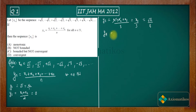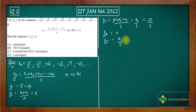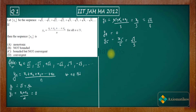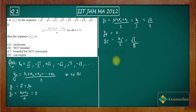For y4: the pairs cancel — x1 with x2, x3 with x4 — giving y4 = 0. For y5, only x5 survives, so y5 = x5/5. Listing the sequence: x5 is the 5th term, which is √3, so y5 = √3/5. Similarly, y7 = √(7)/7... actually, following the pattern, y7 = x7/7 = √4/7.